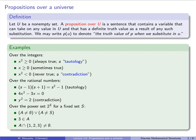Our third example is more abstract. The universe is no longer a set of numbers but rather a collection of subsets of a fixed set S. Our first proposition is: A is non-empty or A is not the entire set S. This is either true or false for any subset A — it's true if A is a non-empty proper subset, and false if A is empty or all of S. So this is a proposition over the power set of S.